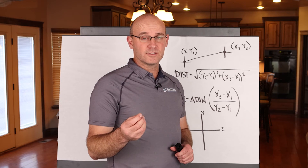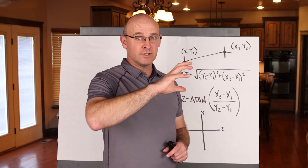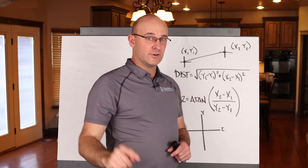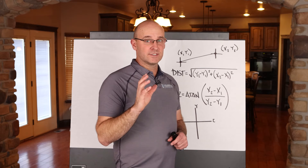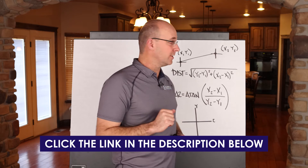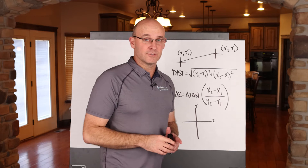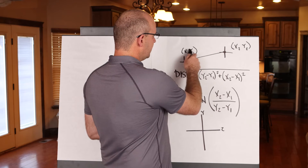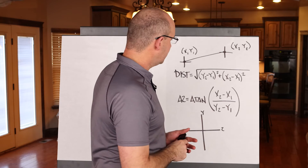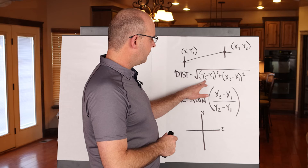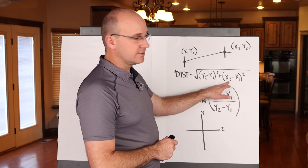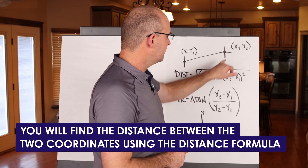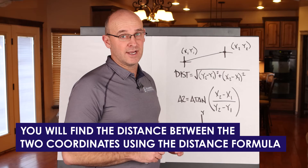Now that you know how coordinates work — X, Y, Z, quadrant sign conventions, and azimuth from zero to 360 degrees — here are some key formulas. First, the distance formula: if you have two coordinates each with an X and a Y, the distance between them is the square root of (Y2 minus Y1) squared plus (X2 minus X1) squared. This gives you the distance between any two coordinates as long as you have their values.